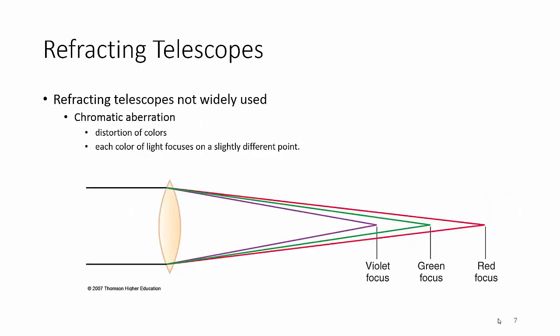This is another problem with refracting telescopes—it's called chromatic aberration. Basically what it is is the colors will focus at different points. So your prime focus is actually at different points depending on what color is going through. So it's kind of a problem: where do you want to focus? What color is more important to you?